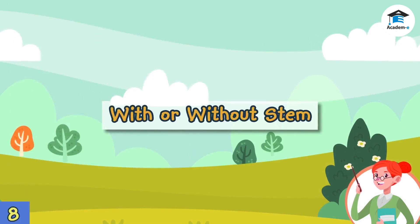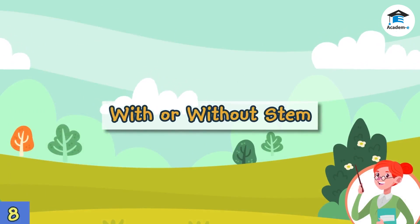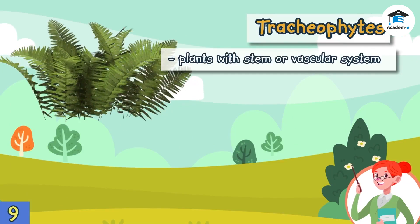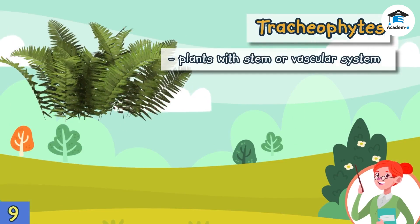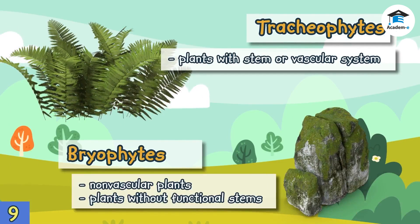Plants with a stem or vascular system are called tracheophytes. These plants have true roots, leaves, and stems. Plants without functional stems are called bryophytes, or non-vascular plants.